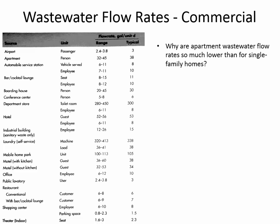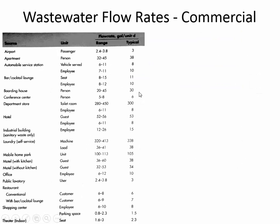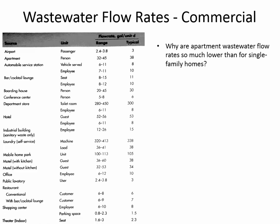I asked the question: why are apartment wastewater flow rates so much lower than a single family home? If one person is living in a house, they'll generate 103 gallons per person per day. But one person in an apartment generates only 38 gallons per apartment person per day instead of 103. Why would someone living in an apartment generate so much less wastewater than someone in a house?